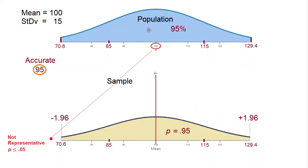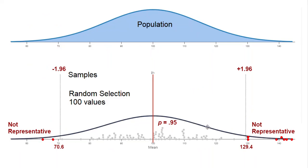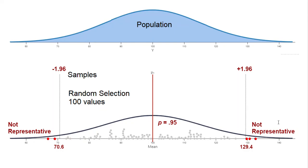Not all values we randomly select will be within those boundaries. There is a 0.05 probability of randomly selecting a value that is 70.6 or below, or 129.4 or above. Shown here is a random selection of 100 values. In actuality, we got nine values in the non-representative zone and 91 within the representative zone. In the next sample, it nails it — 5 of the 100 values are non-representative and 95 are representative.